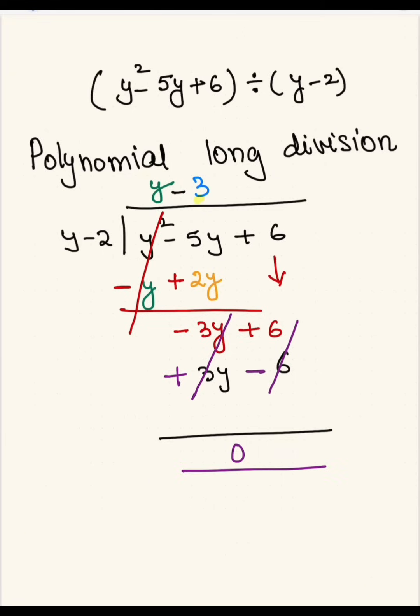So in this case there is no remainder. We got a remainder as 0. The answer for polynomial long division is written as quotient plus remainder over divisor. The quotient here is y minus 3, and the remainder here is 0 over divisor, which is y minus 2.